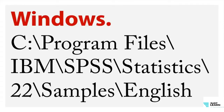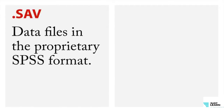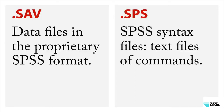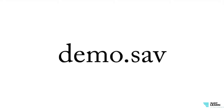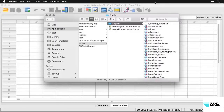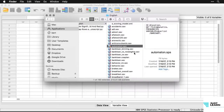You have to navigate there manually to find those files. When you do, you'll see a bunch of files. The important ones are the .sav files — data files in the proprietary SPSS format, which can only be opened in SPSS — and .sps files, which are SPSS syntax files containing commands that can run analyses, graphs, and other functions.